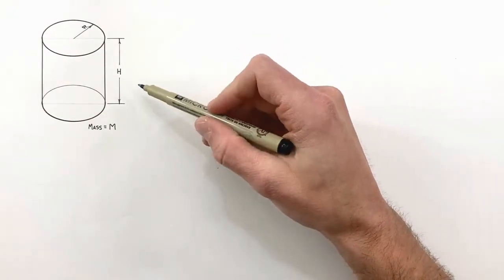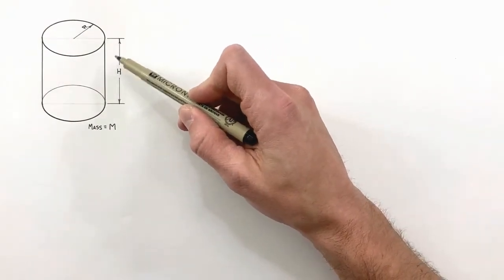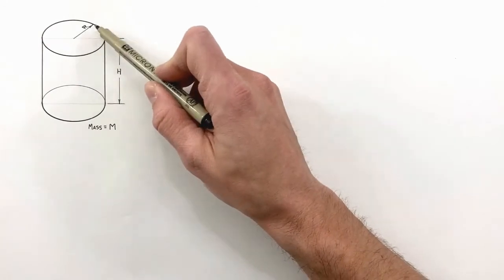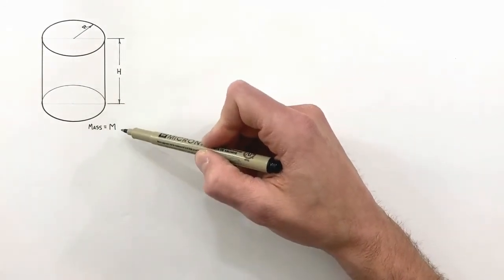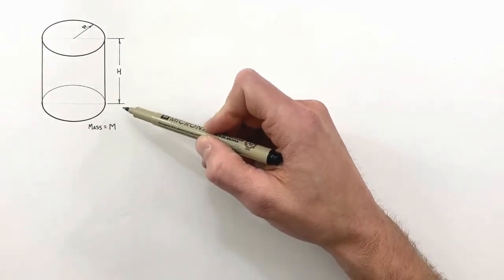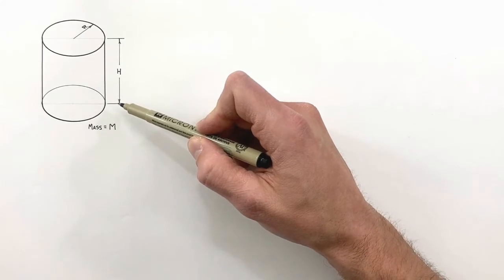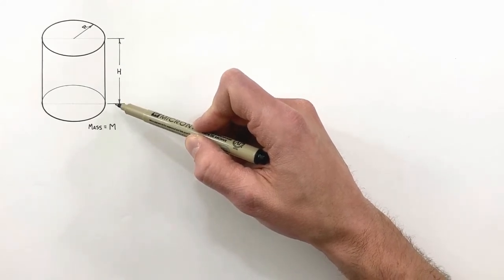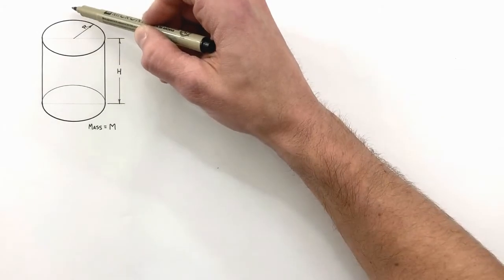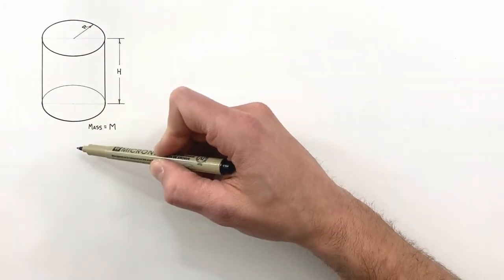Today what we're going to do is take a look at a solid cylinder which has some radius r, a height h, and a mass m. And we're going to determine for this cylinder the rotational moment of inertia around an axis which passes through its center.